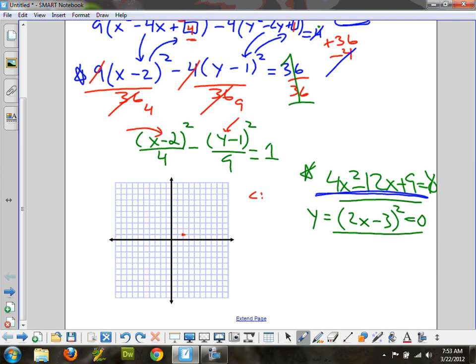So there's my center at the 2 comma 1 point. The box that I make has a displacement of the square root of the value under the x. And that's my horizontal displacement from center. So then I'm going to go 2 out to the right and 2 out to the left. Underneath the y controls the y displacement for the box. Square root it, 3 up and 3 down.